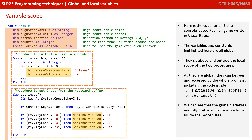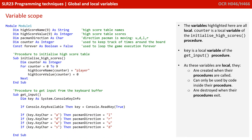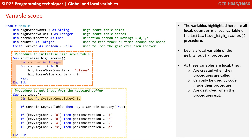We can see that the global variables are fully visible and accessible from inside those procedures. The variables highlighted here are all local. Counter is a local variable of the initialised high scores procedure. Key is a local variable of the get input procedure.